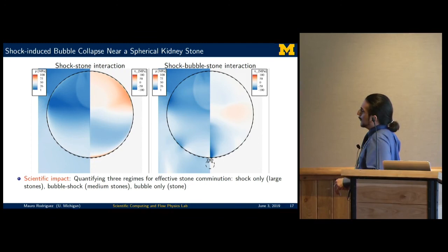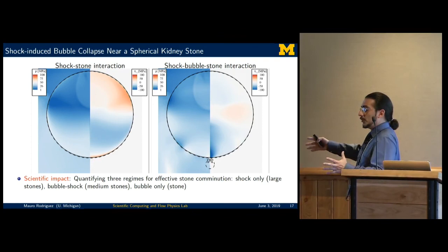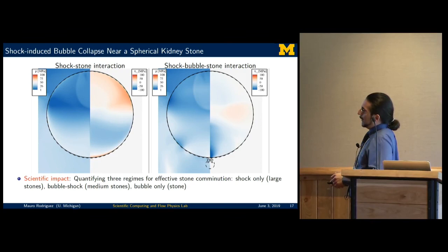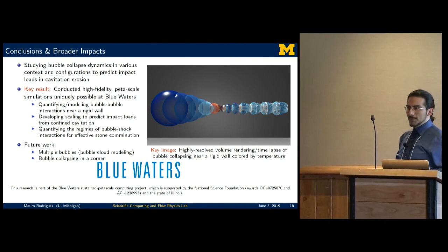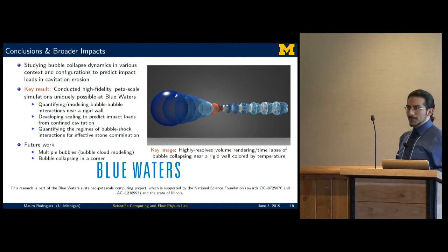What we're currently doing is contributing to the field by quantifying these three regimes to determine what is the most effective stone comminution in terms of how large does the stone have to be such that the shock really dominates in breaking the stone? What size do we need for medium stones for there to be a synergy between the bubble and the shock interacting? And then how small does the stone have to be such that the bubble completely dominates the impacts and collapses? I don't know where I'm at in time. I'm at zero, so I'll just leave you with the conclusions and I look forward to answering your questions. Thank you.